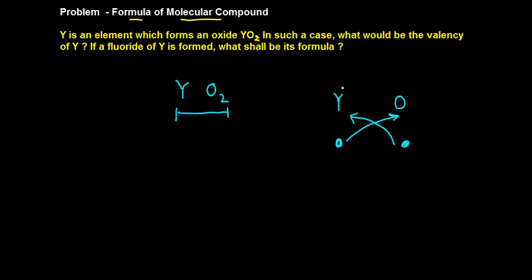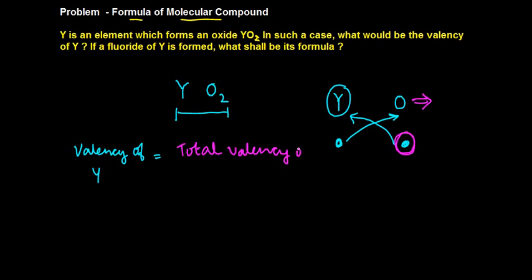Or in other words, the valency of Y is equal to valency of Y which comes over here is nothing but this total valency of O, right? The valency of Y is equal to what? Total valency of O, right?